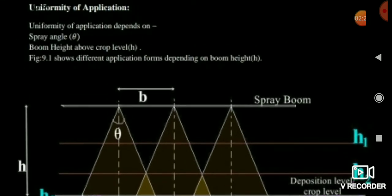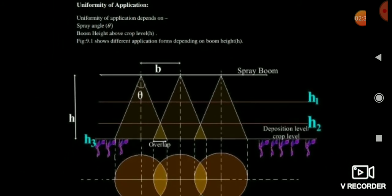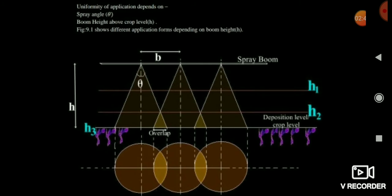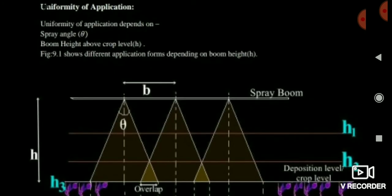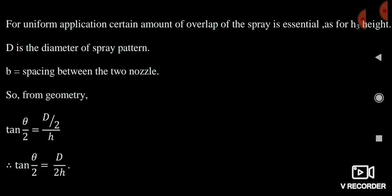For uniformity of application, you need basic trigonometry. The spray angle is the total angle theta. When we apply trigonometry, we use tan(θ/2) = (D/2) / H, where D is the diameter of the spray pattern and H is the height of the sprayer boom. Be careful not to confuse θ/2 with θ — the spray angle is theta, and we use half of that in the formula.